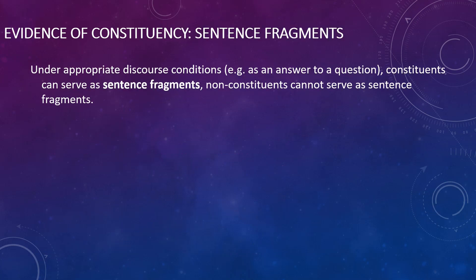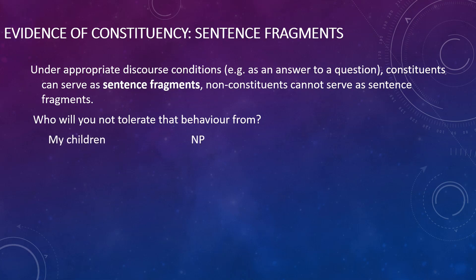Evidence of constituency using sentence fragments. Under appropriate circumstances — for instance, when answering a question — constituents can serve as sentence fragments, and non-constituents cannot. Sometimes we don't answer in full sentences. For example: 'Who will you not tolerate that behavior from?' — the answer could be 'my children.' So 'my children' here is a sentence fragment — it doesn't include a verb — but it's actually quite significant that we can do that.